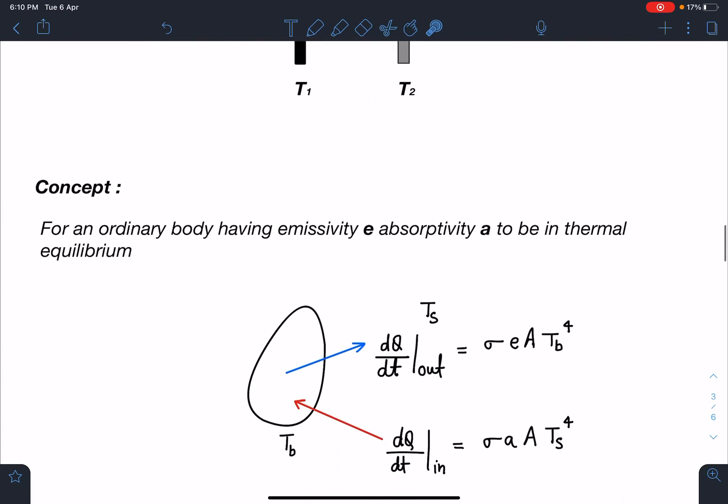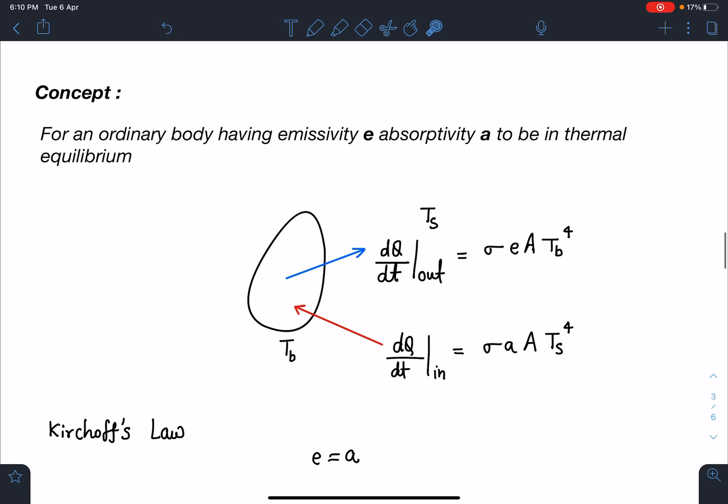Let's discuss the concept part here. For an ordinary body having emissivity e and absorptivity a to be in thermal equilibrium with the surroundings, we can say temperature of body is Tb and Ts is the surrounding temperature.